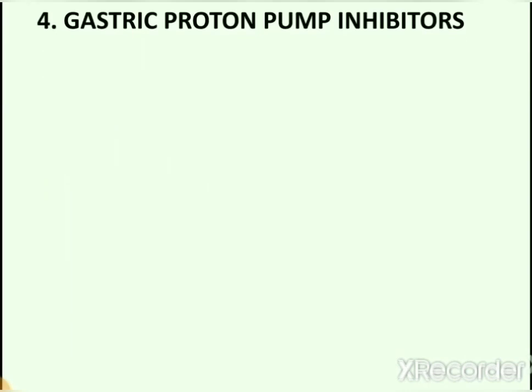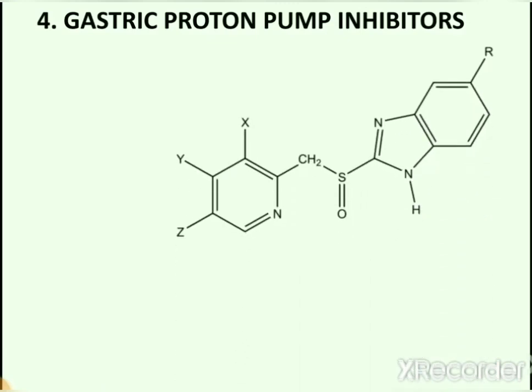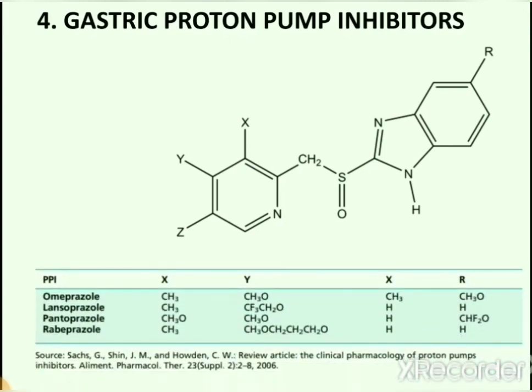The last category of antihistaminics includes gastric proton pump inhibitors, which act on the gastric proton pump. By substituting different groups in the basic structure of a gastric proton pump inhibitor, you can generate omeprazole, lansoprazole, pantoprazole, and rabeprazole.